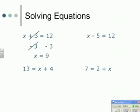In the next one we've got x take away 5 equals 12. Again we've got to get rid of the take away 5, so the opposite of taking away 5 is adding 5. If I add 5 to one side I've got to add 5 to the other. The plus 5 and minus 5 cancel each other out, leaving x equaling 17.